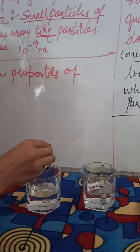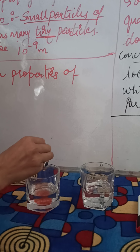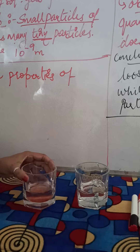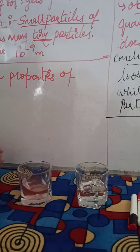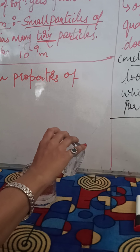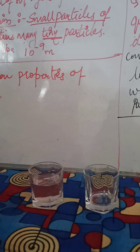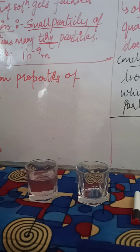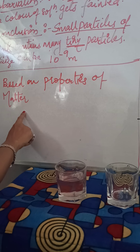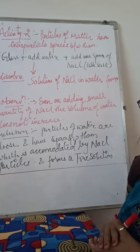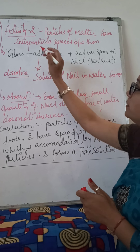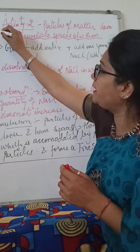For this experiment we require Glass A and Glass B. In Glass A, first we need to add water, then a few drops of ink, and then add more water to the Glass A solution. Whenever we add drops of ink in water, we observe that the color of the water changes from transparent to the color of the ink. On further dilution, by adding more water, the color gets fainted. So the conclusion is: small particles of ink contain many tiny particles, which is why they easily intermix and form a solution.